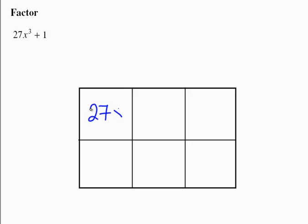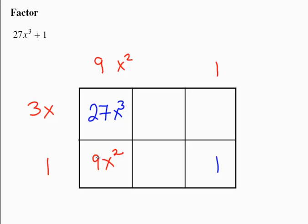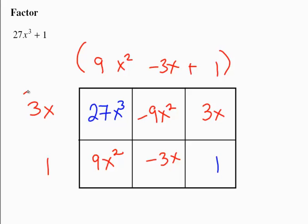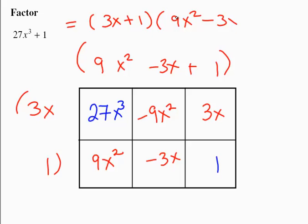We're factoring 27x cubed plus 1. I cubed 3x to get 27x cubed and I cubed 1 to get 1, which means this has to be 9x squared and this has to be 1. These terms have to cancel out, so we work backwards. 9x squared has to cancel with negative 9x squared, which means this has to be negative 3x. This negative 3x would have to cancel with positive 3x — everything works out. So the factored form is 3x plus 1 times 9x squared minus 3x plus 1.